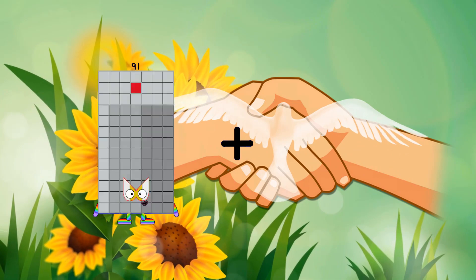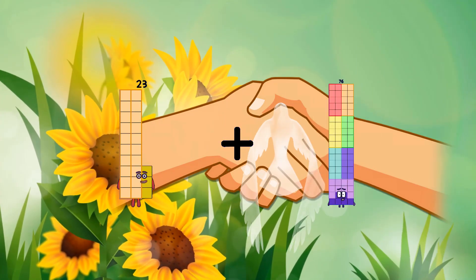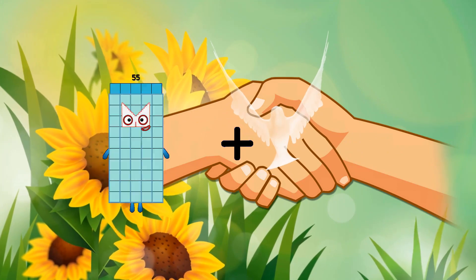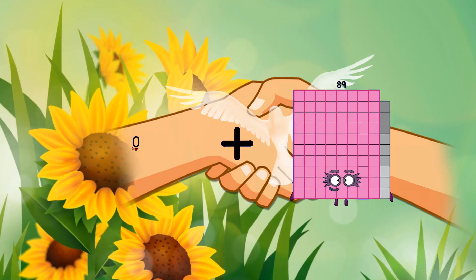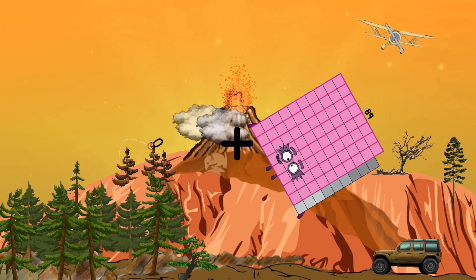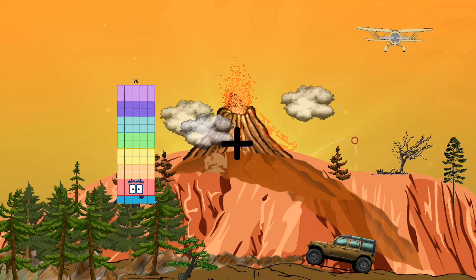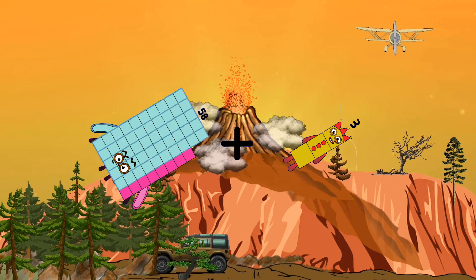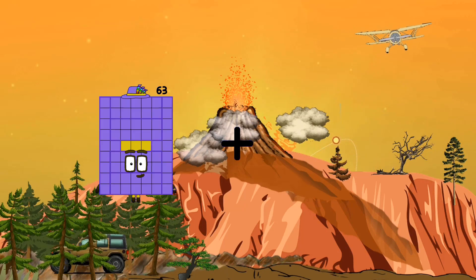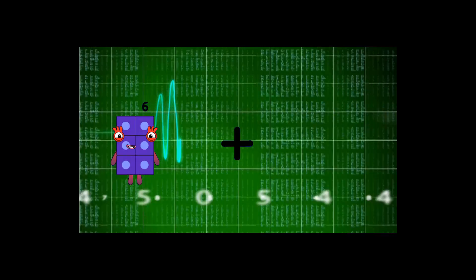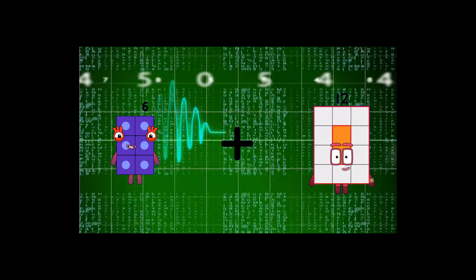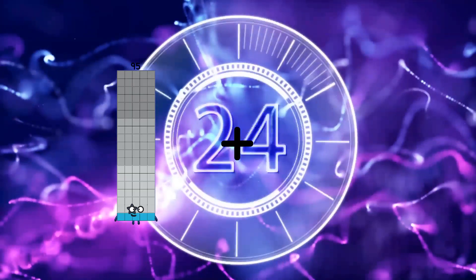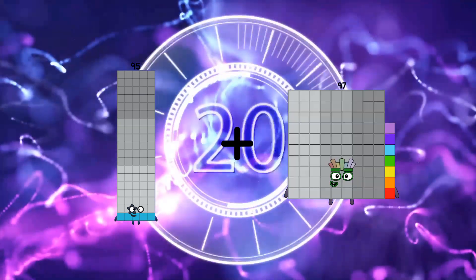23 plus 31 equals 54. 0 plus 89 equals 89. 58 plus 3 equals 61. 21. 6 plus 12 equals 18. 95 plus 97.